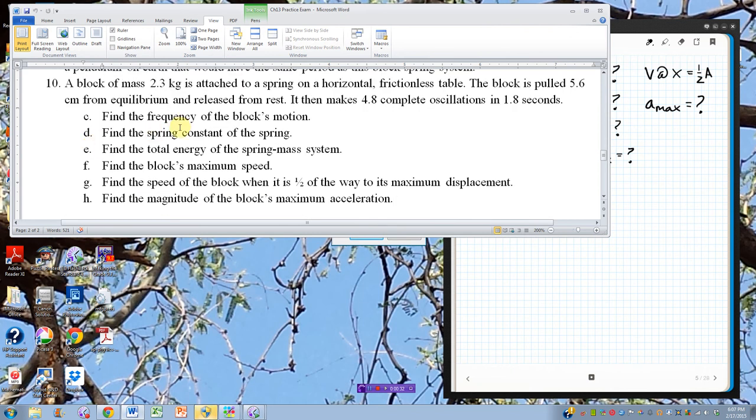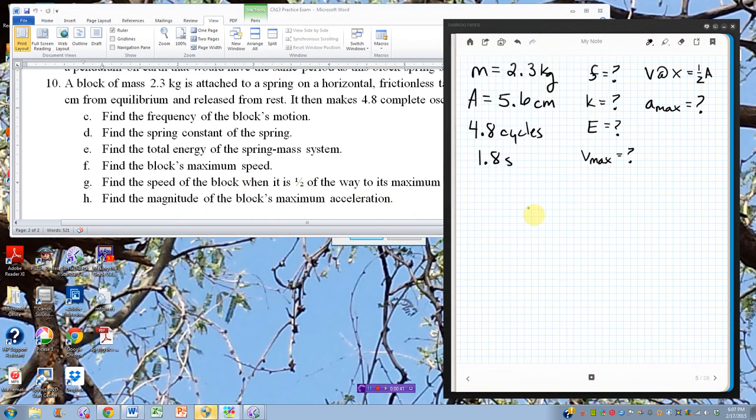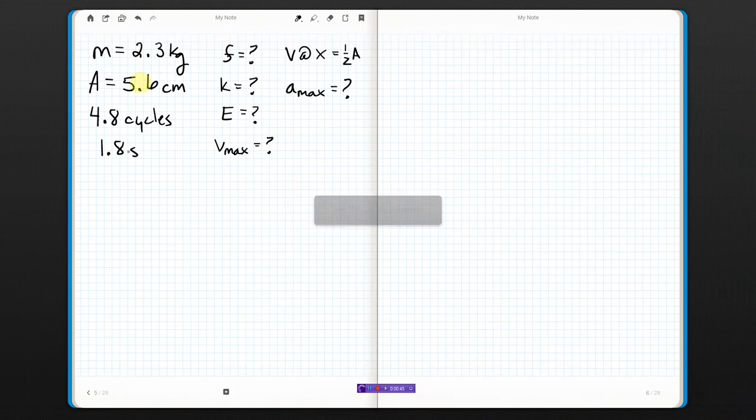I want to find frequency, spring constant, total energy, max speed, speed when it's at half of the amplitude, and max acceleration. So, I've written down all the pertinent information, there's only four things, and here's all the stuff we want to find. Let's just make our way through the list.